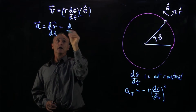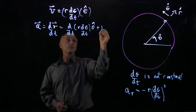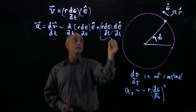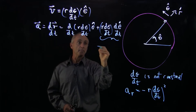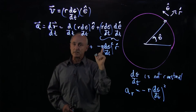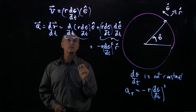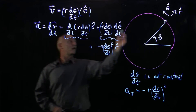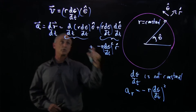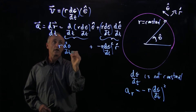Because it's a product of two terms, we need the product rule from calculus when we take a derivative. The derivative will be the derivative of the first term times the second term, plus the first term times the derivative of the second term. We've already analyzed the first piece — this is precisely minus r d theta dt quantity squared r hat, which was always the non-zero radial acceleration. For circular motion, r is a constant, so it's only d theta dt that is no longer constant, and we simply take a second derivative to get r times d squared theta dt squared theta hat.